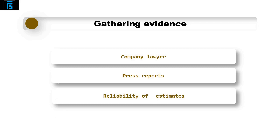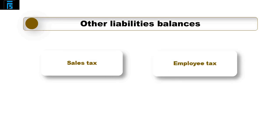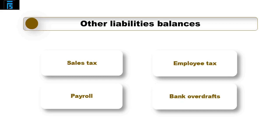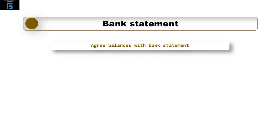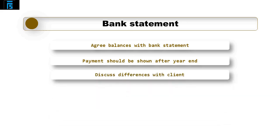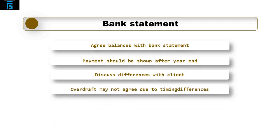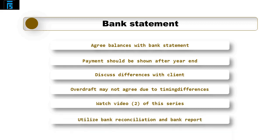Other liability balances include sales tax, employee tax, payroll and bank overdrafts. For each of these, the bank statement can help verify the balance — payments should be shown after the year end, and any differences should be discussed with the client. The bank overdraft may not completely agree to the bank statement due to timing differences, so the same bank reconciliation procedures discussed in the current assets video apply, along with the bank report.